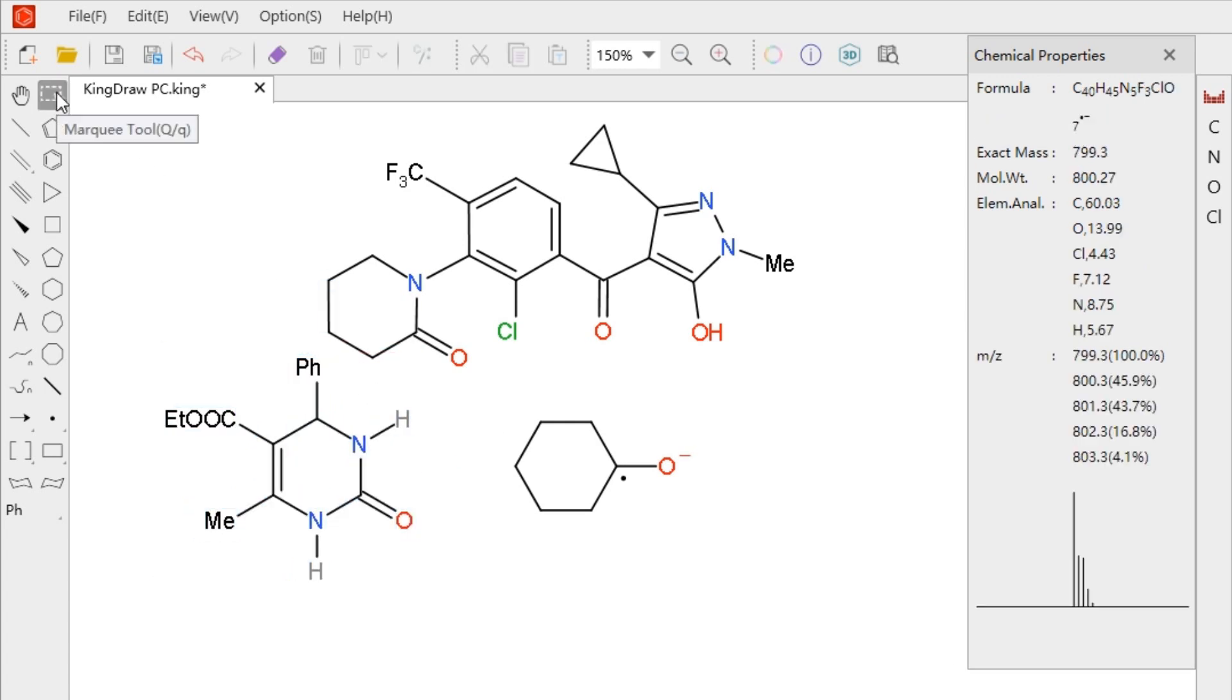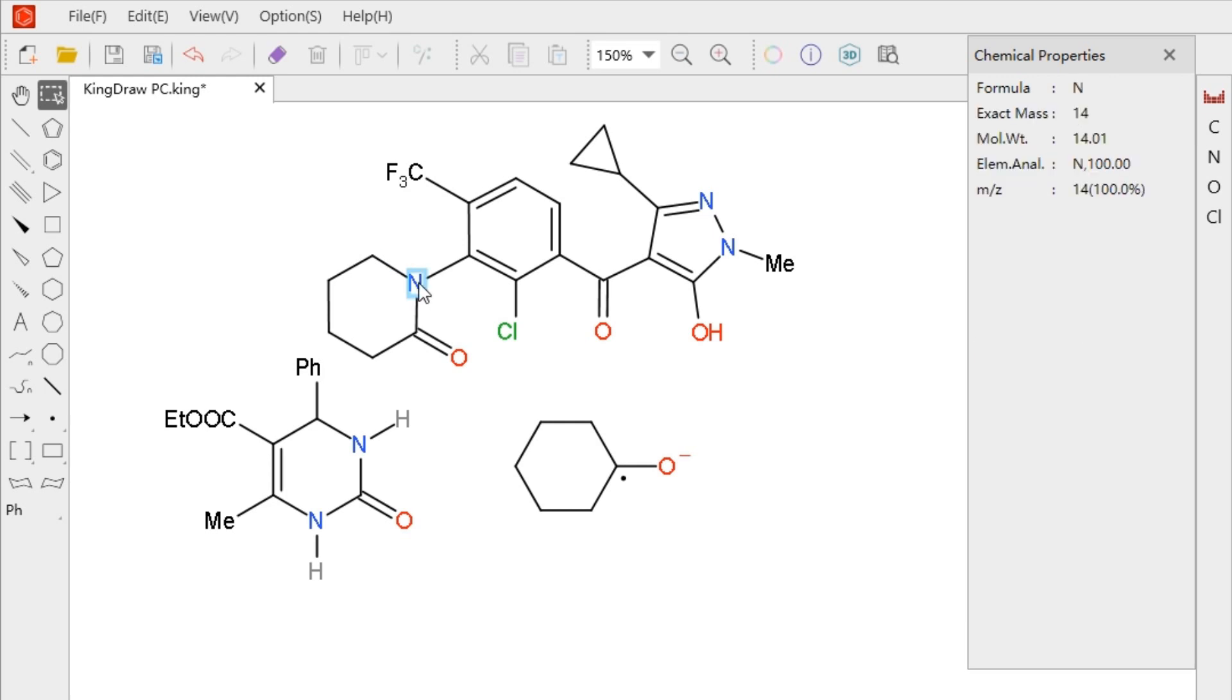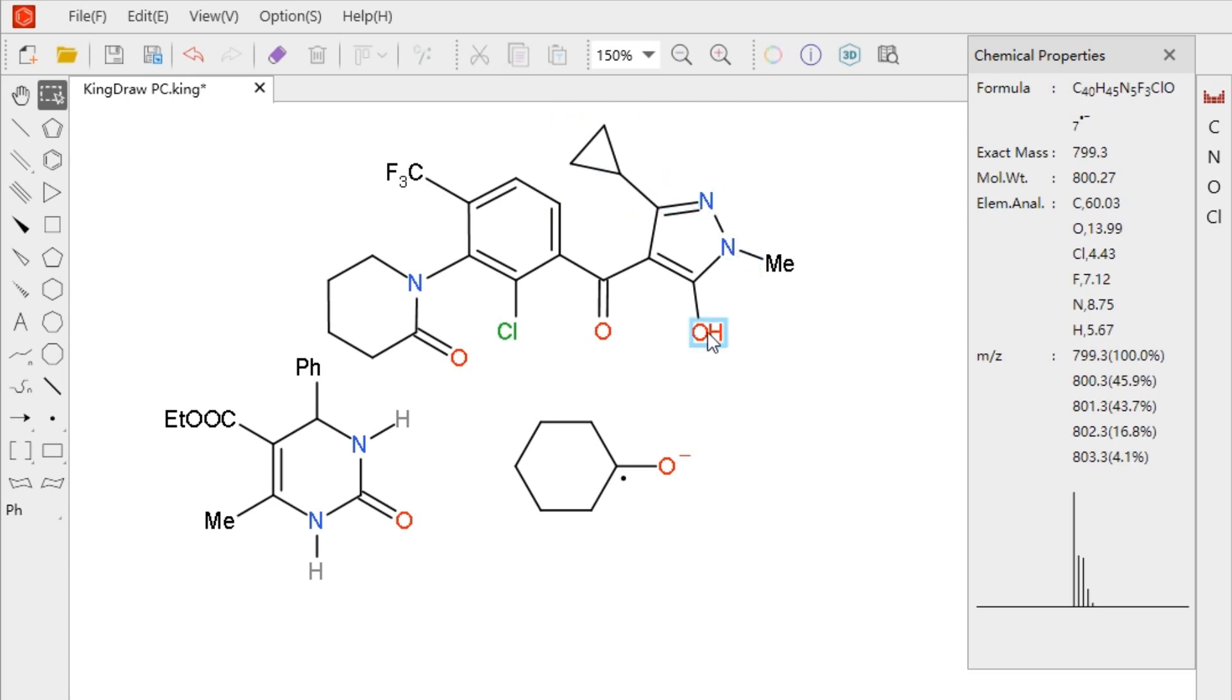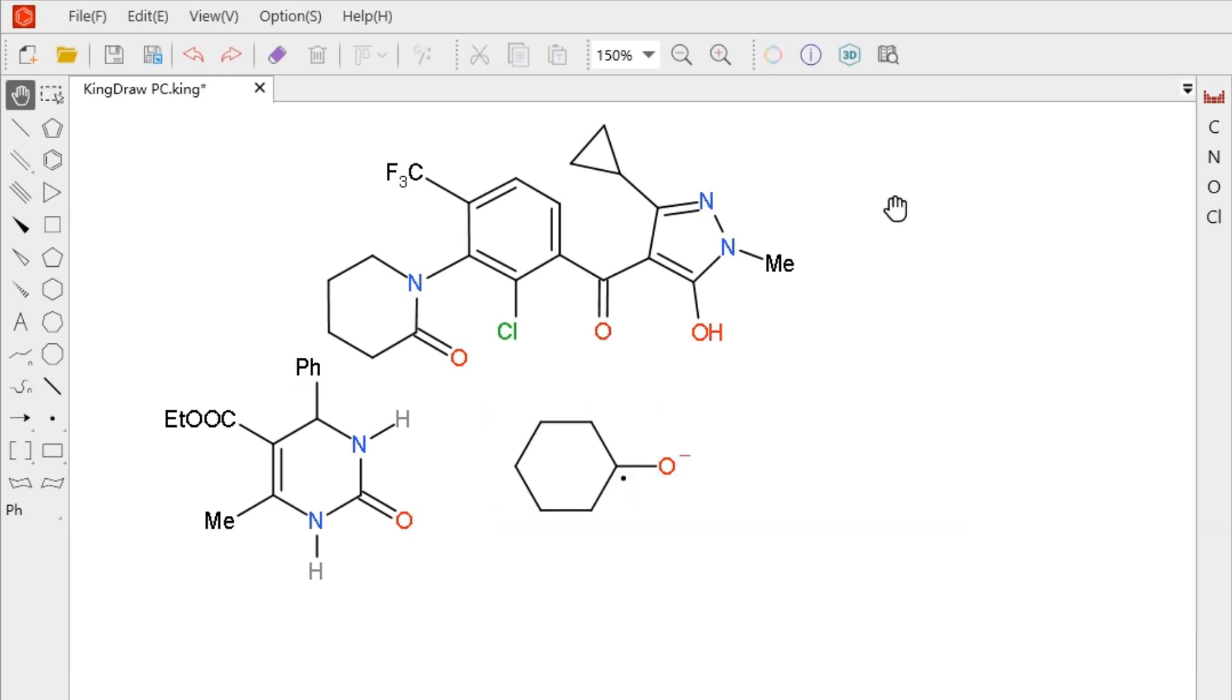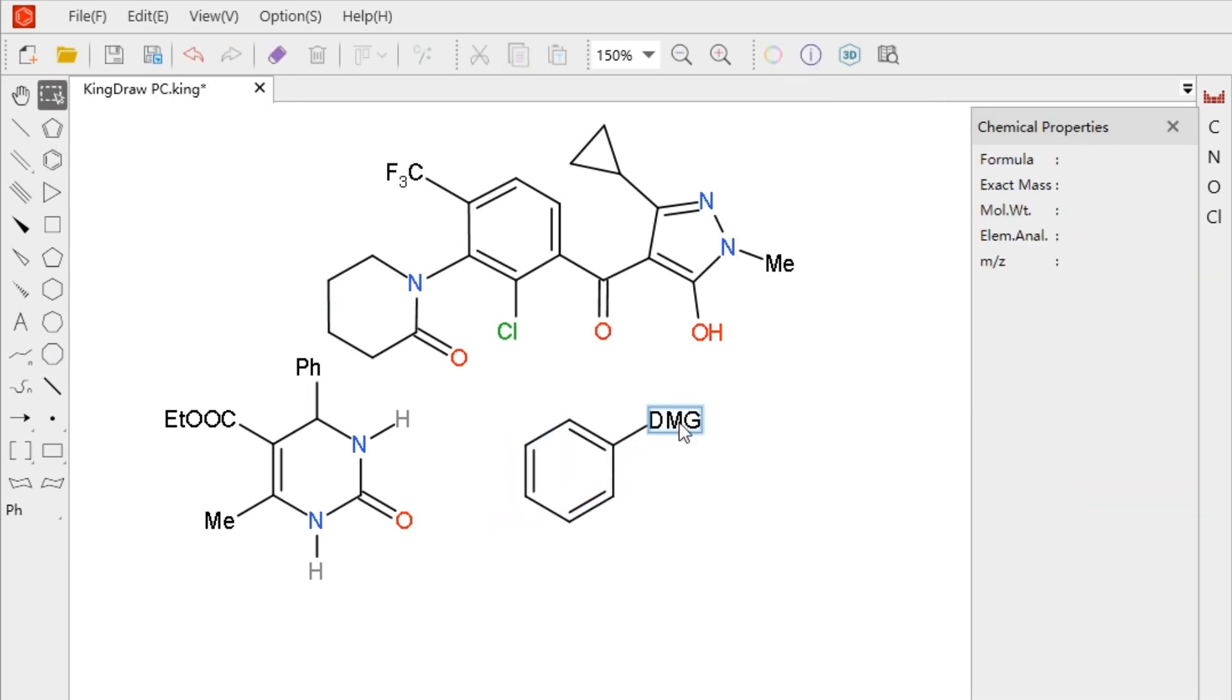In this tool, the system can automatically identify the chemical properties of the elements we draw, such as bonds, rings, acyclic chains, snaking chains, groups, charges, radicals, and polymers. For the text input group, the chemical properties cannot be recognized temporarily.